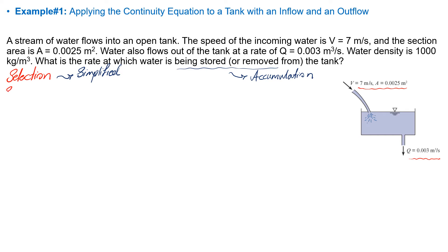Step number two is sketching. In this step, you need to sketch the control volume. I already have a figure here showing the system. The key characteristic you need to consider is that the control volume and control surfaces should be perpendicular to the velocity vectors — to inflow and outflow. I'm going to show the control volume with dashed green lines. You can see that my control surface is perpendicular to the outflow, and I need to make sure it is perpendicular to the inflow as well.